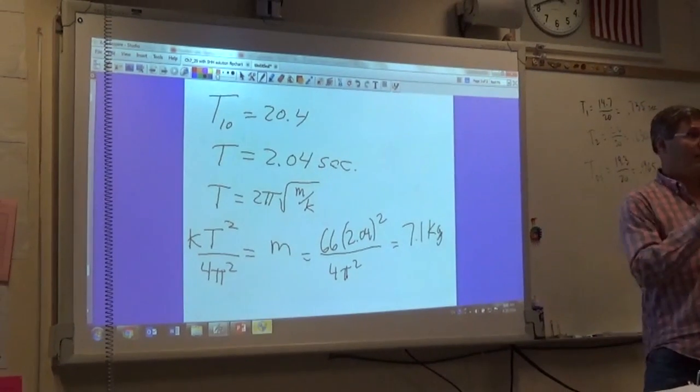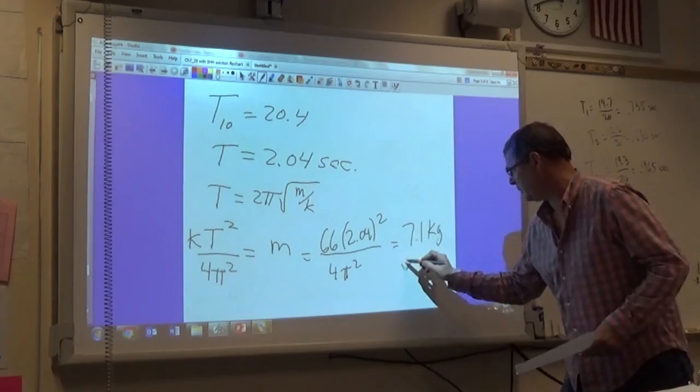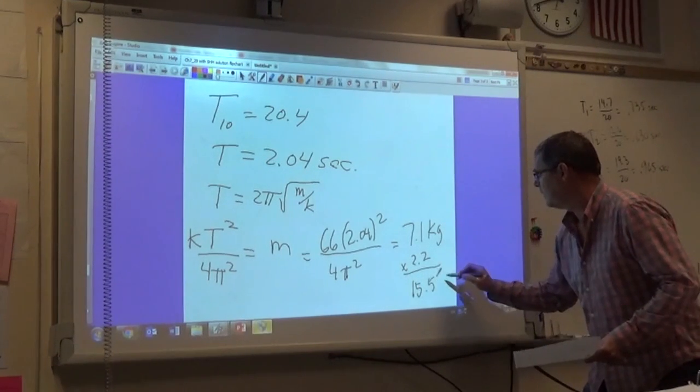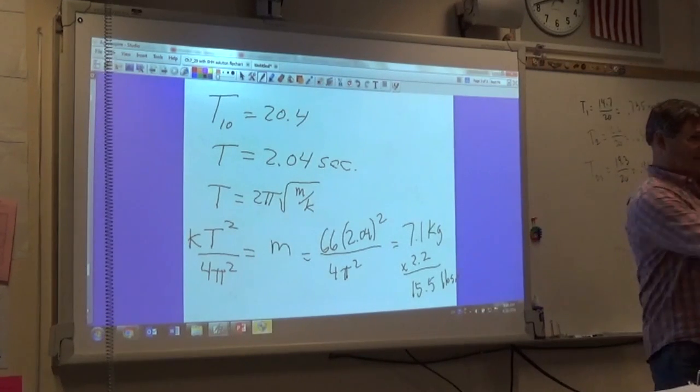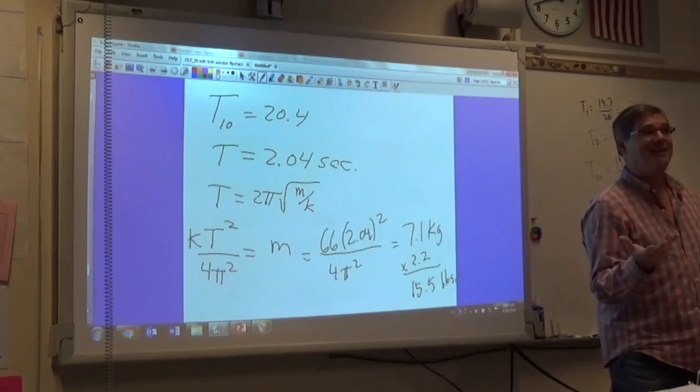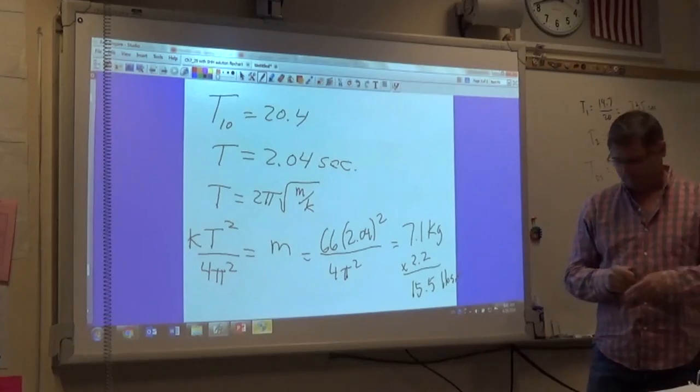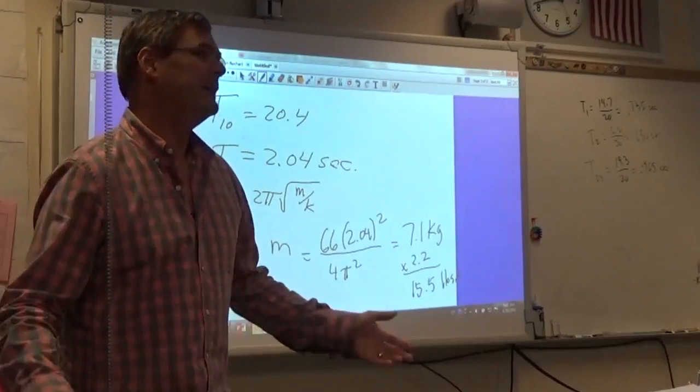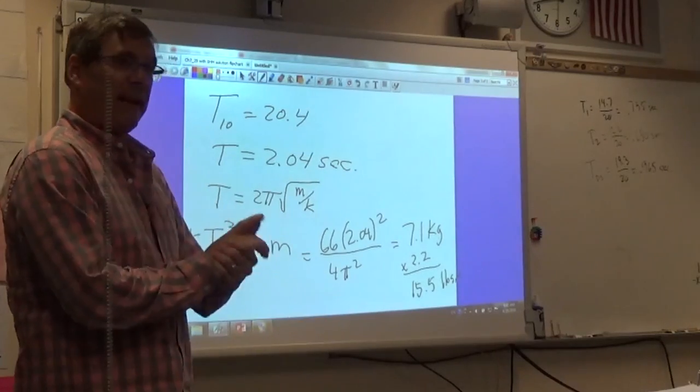You multiply that by what? Anyone know? What's the conversion for kilograms to pounds? 2.2. So multiply that by 2.2. And that gives me about 15.5 pounds. Any bowlers in here? A 15-pound bowling ball. Is that about right? Yeah. Bowling balls, you know, the little kids, they use 8-pound bowling balls. Professional bowlers, 16-pound bowling balls. So this is a... Well, of course, it's closer to professional size because it's mine. I don't bowl. So kind of a cool experiment.